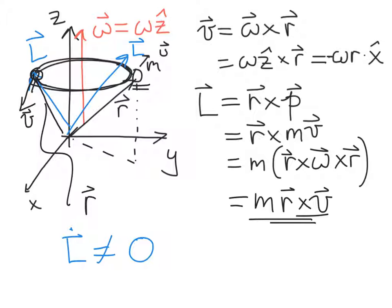This is important because the angular momentum vector no longer points parallel to the z-axis as it did when the particle was in the x-y plane. The inertia tensor has off-diagonal elements, so the angular momentum vector has components along the x and y directions because the particle is no longer trapped in the x-y plane.